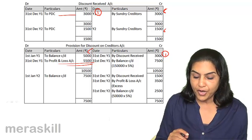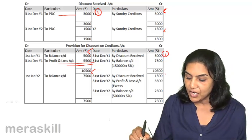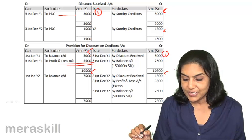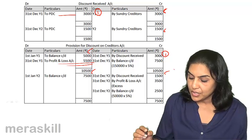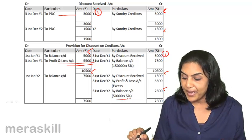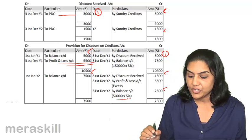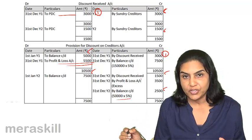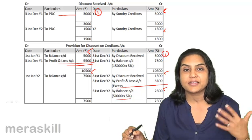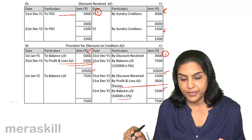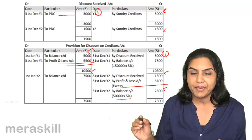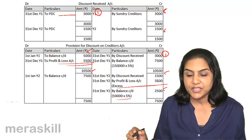Next year, we brought forward the balance of 7500; discount was 1500, so we are now left with a balance of 6000. Out of the 6000, we need a closing balance of only 2500 — five percent of 50,000 — so a balance of 3500 has to be written back to the profit and loss account: profit and loss account debit, to provision for discount on creditors. Note: a provision for discount on creditors is hardly maintained in practice since it violates the concept of conservatism.